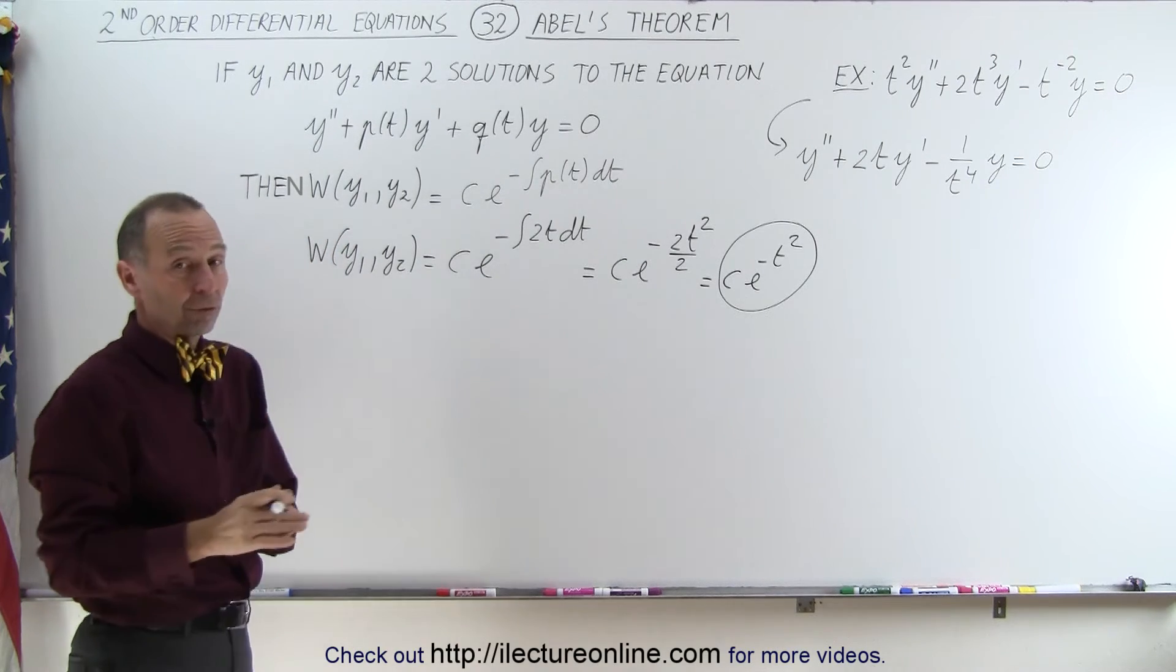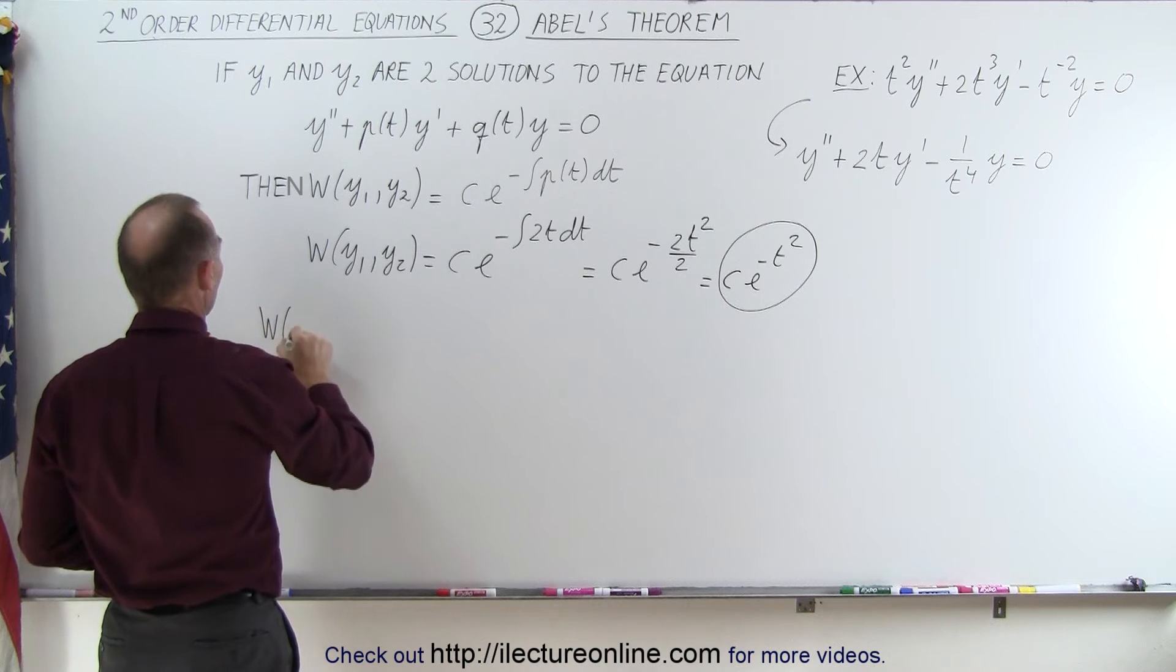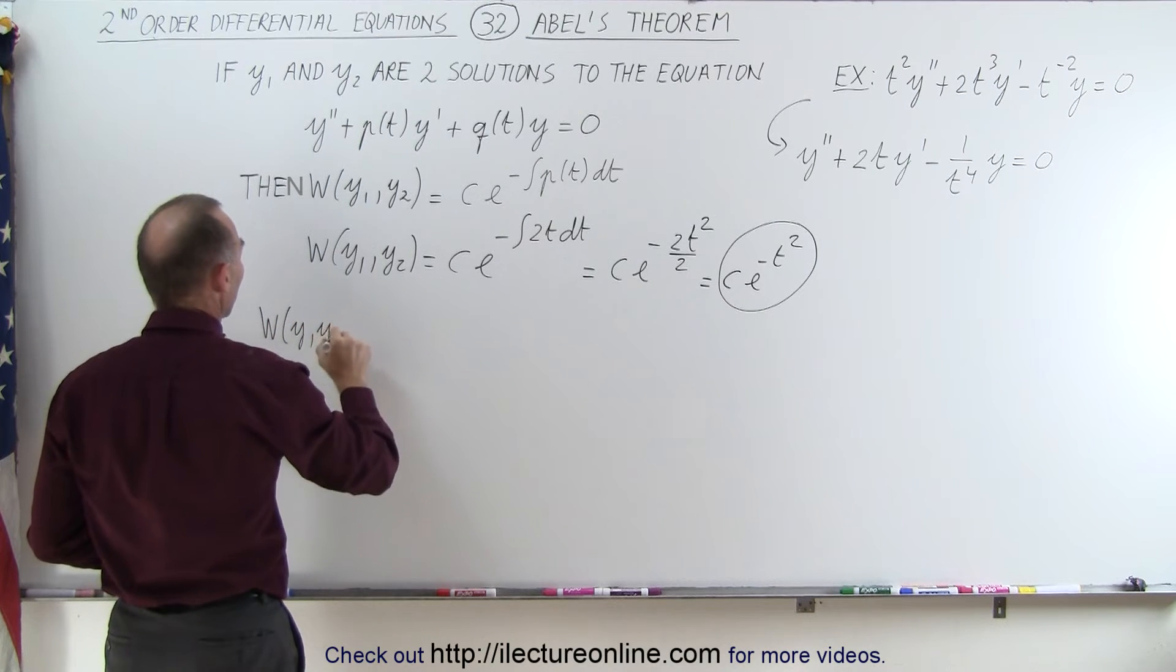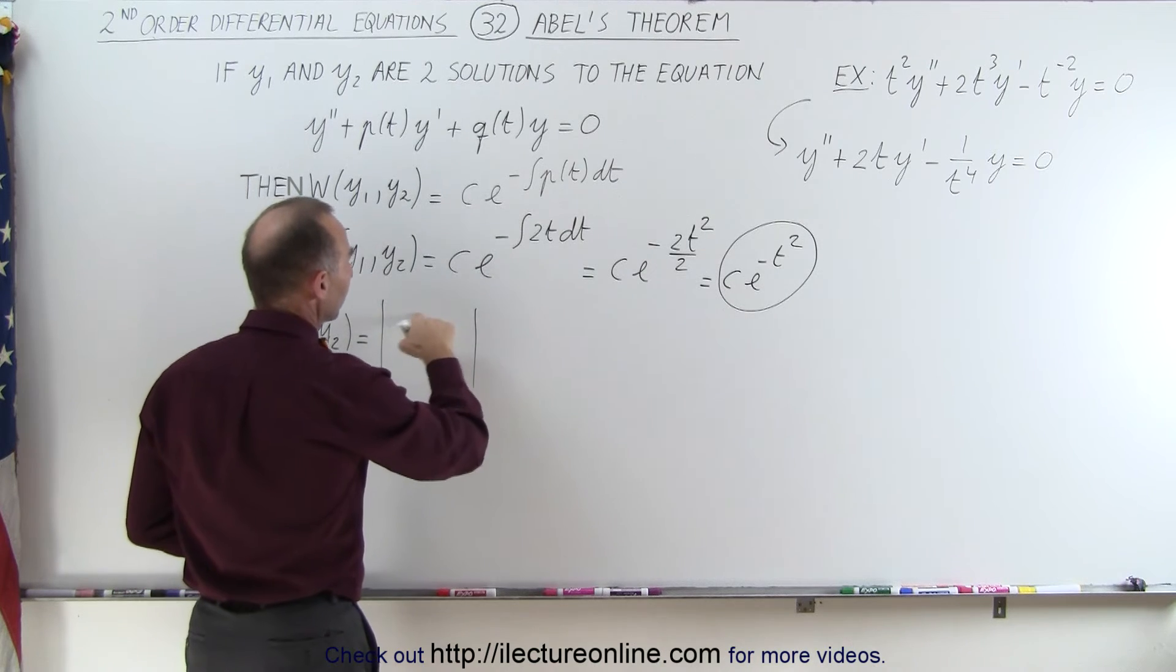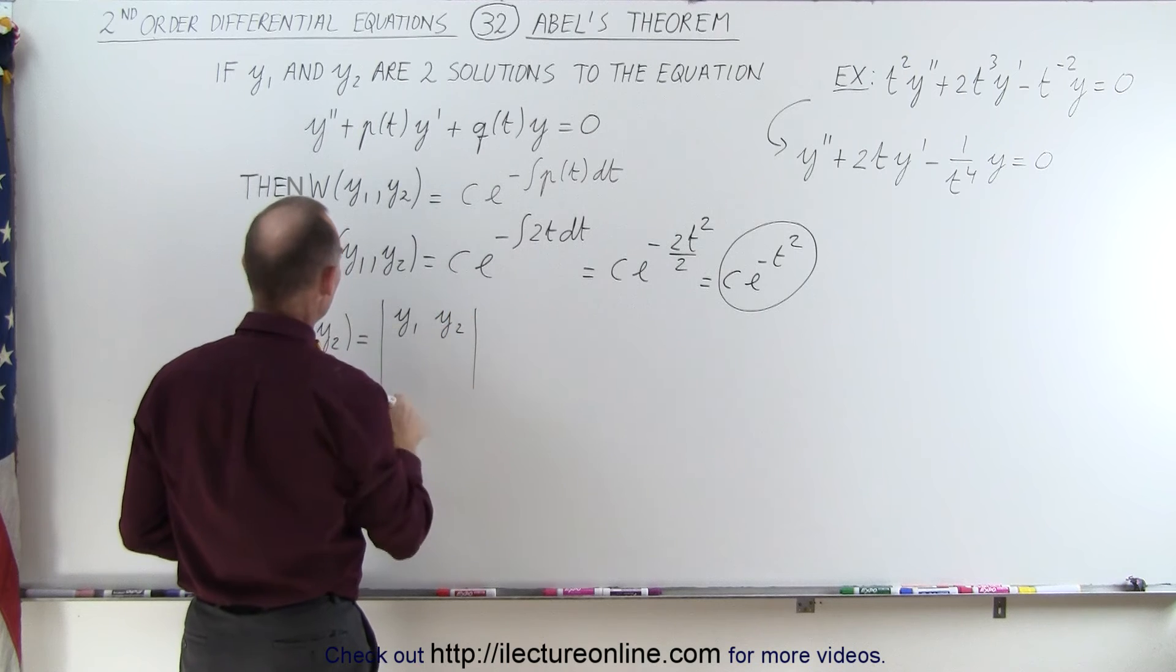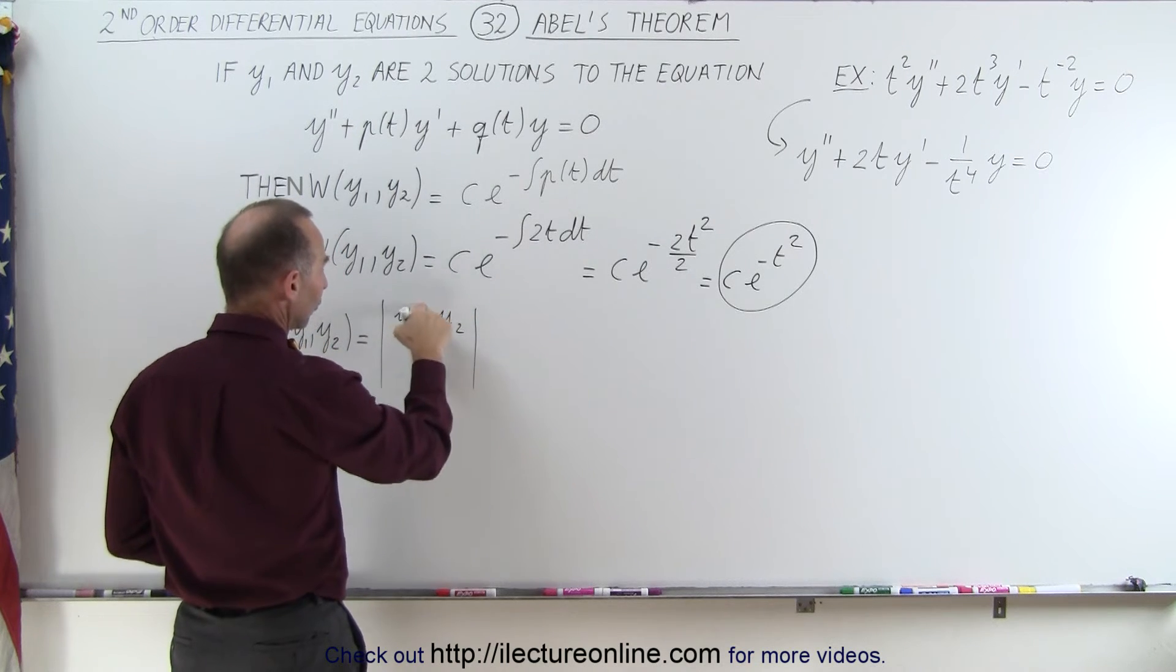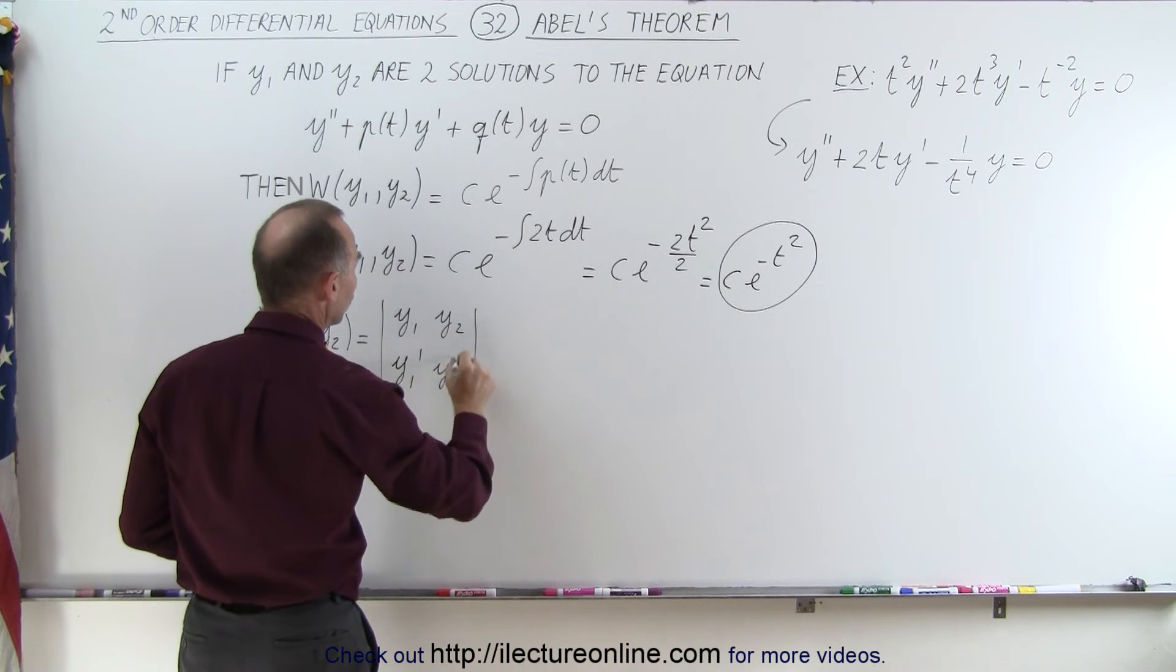Now another way of looking at the Wronskian, the definition of the Wronskian is the Wronskian of two functions y1 and y2 is equal to the determinant, and on the top row we have the two functions y1 and y2, and on the bottom row we have the first derivative of these two functions y1 prime and y2 prime.